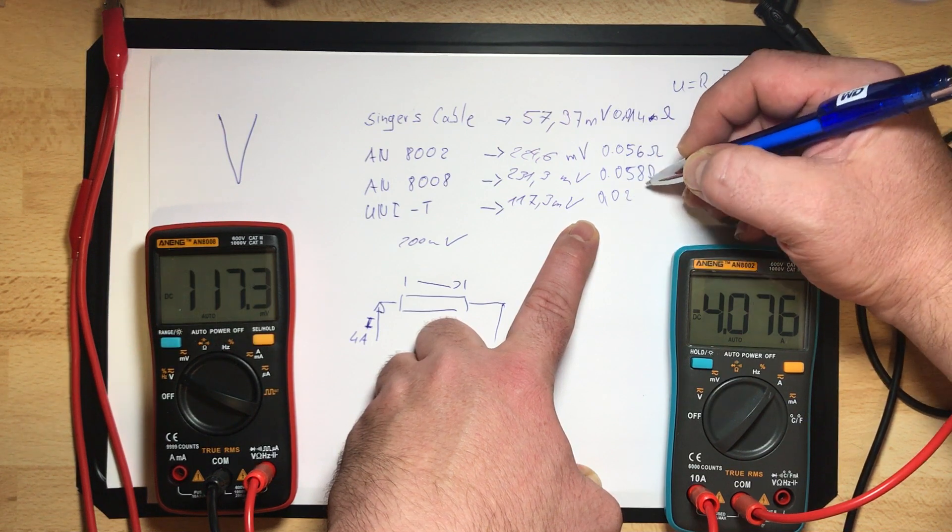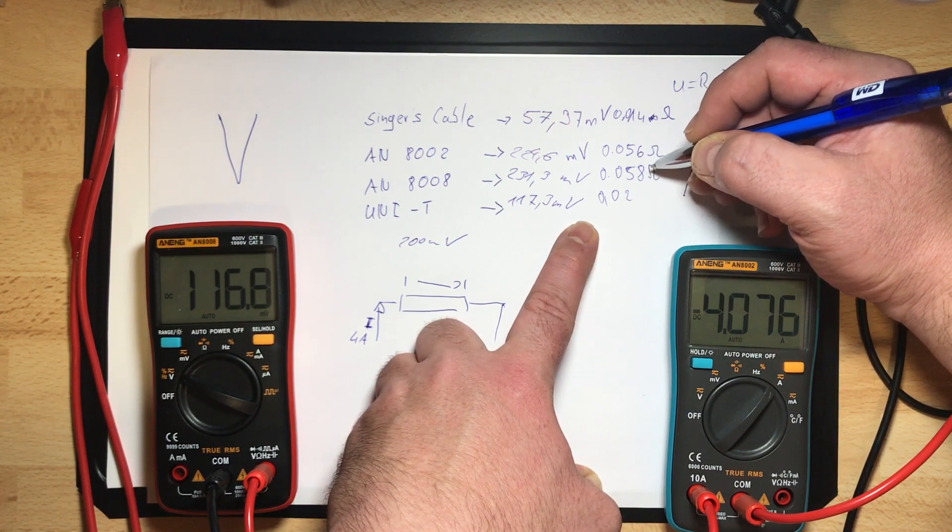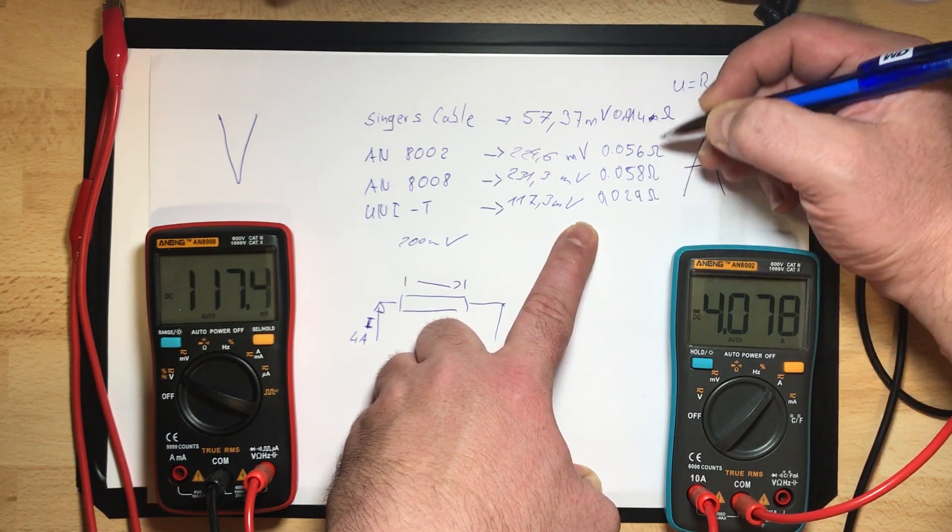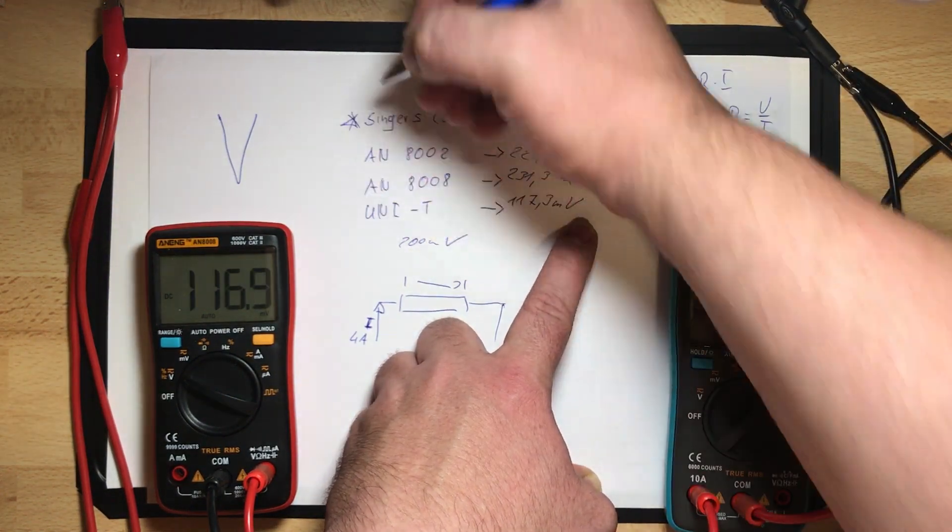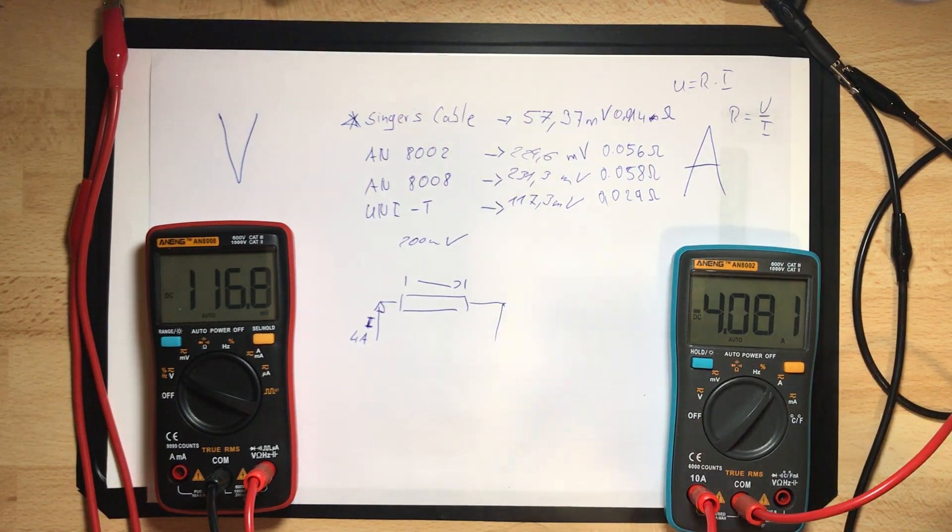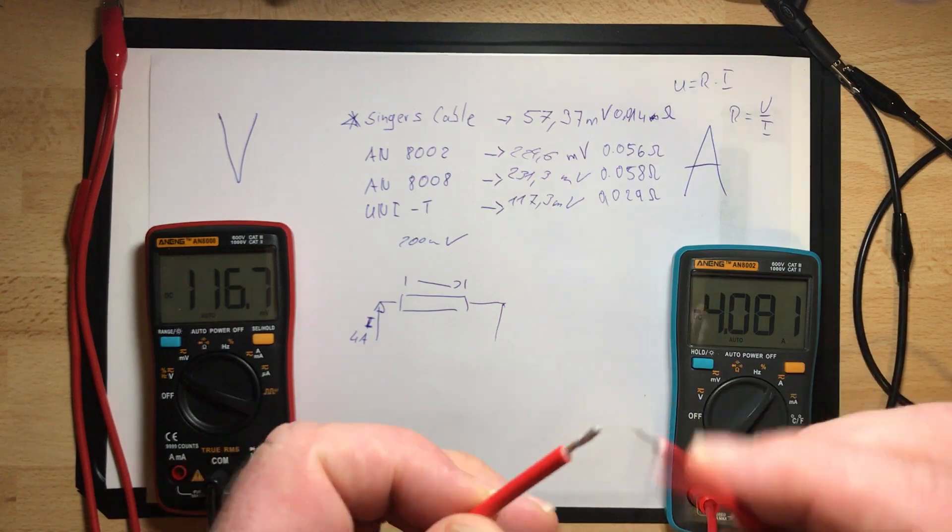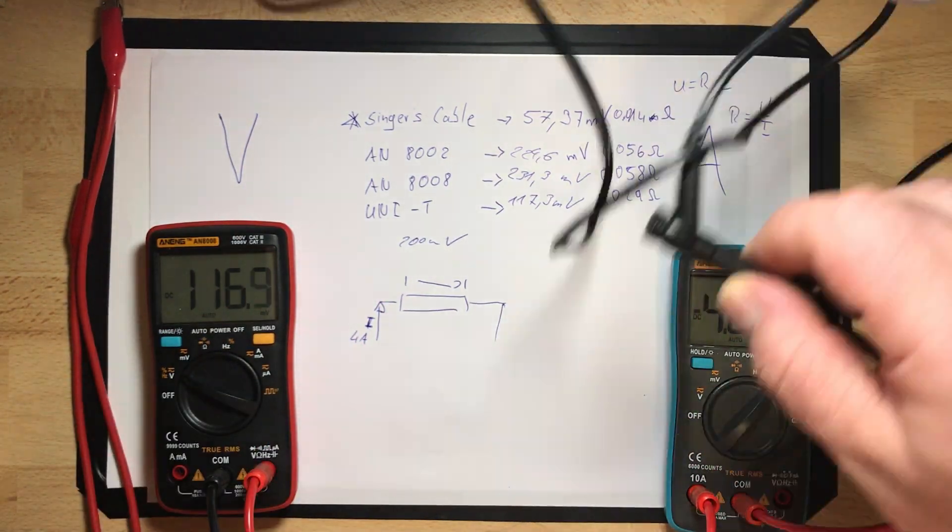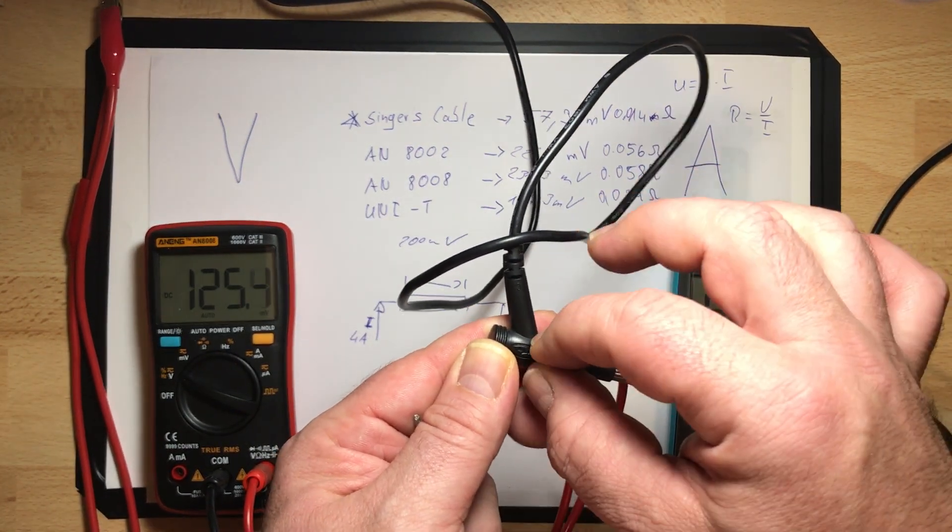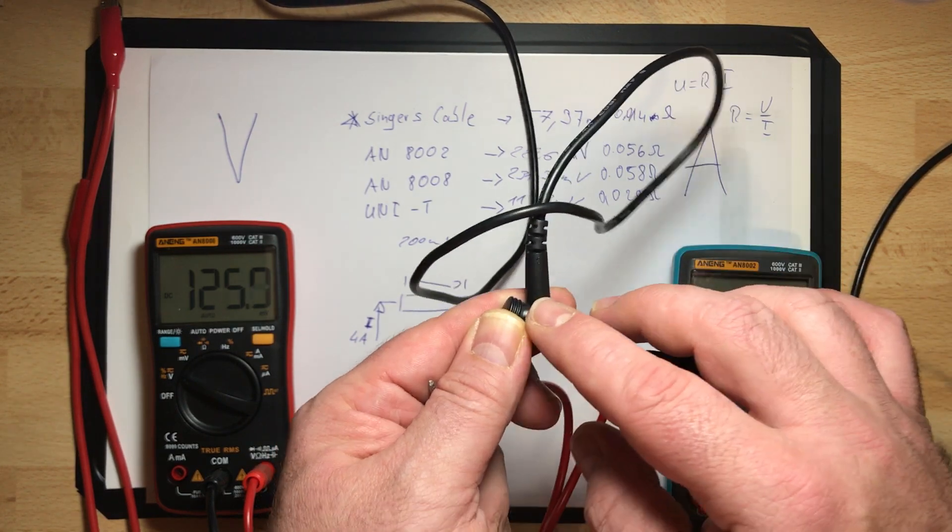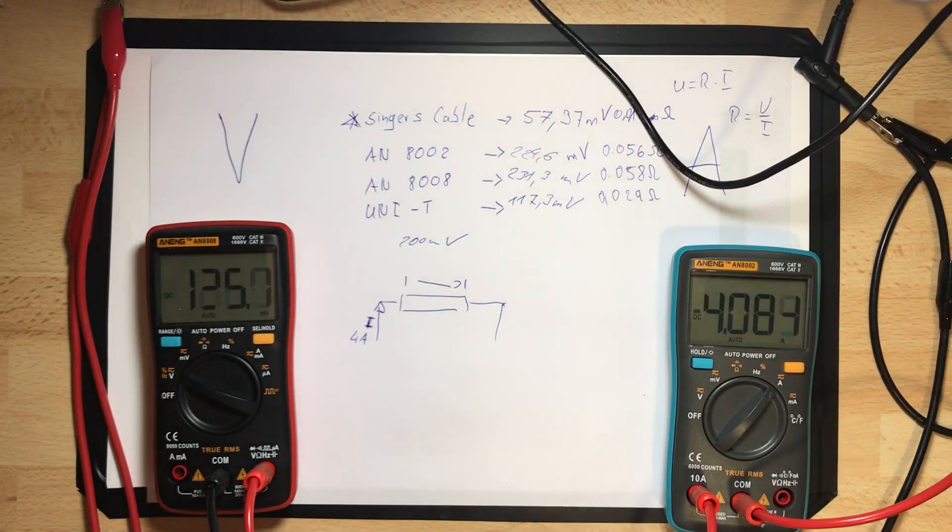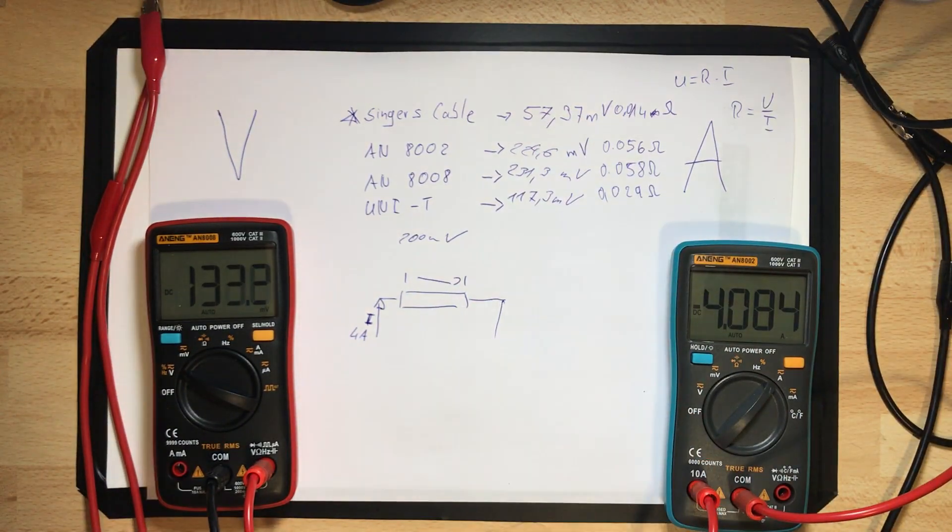The UNI-T has a better lead, a better probe cable than the Aneng ones, and we found it out without destroying any cable. The winner is my self-made cable. This really has the best values, maybe because it's only a straight cable without soldering points or pressed connections, which can result in higher resistance.